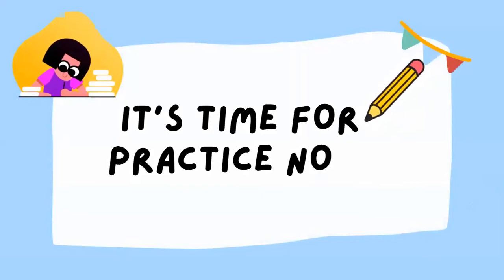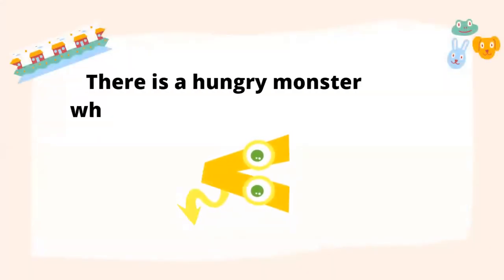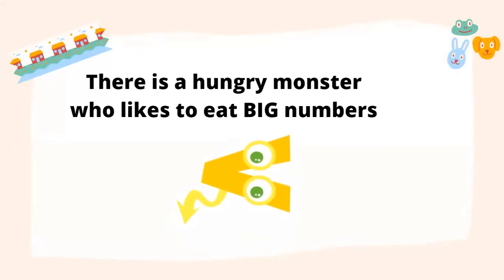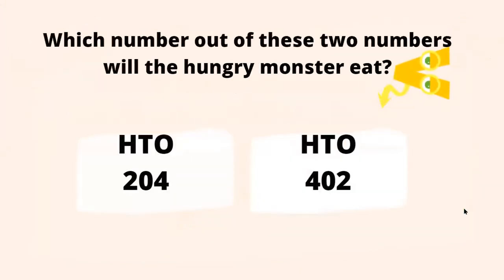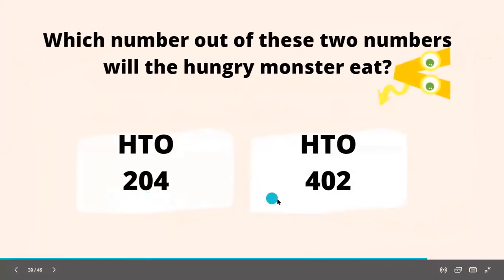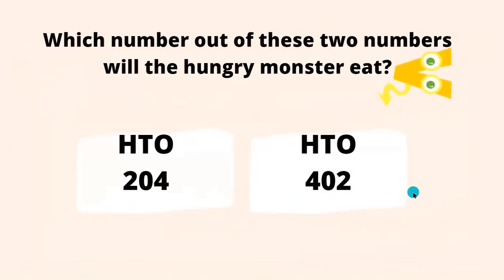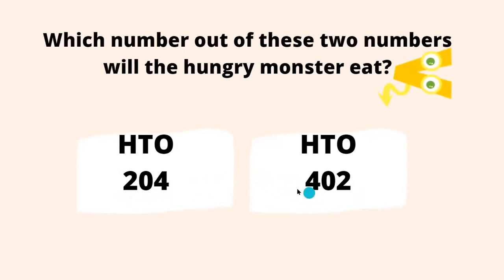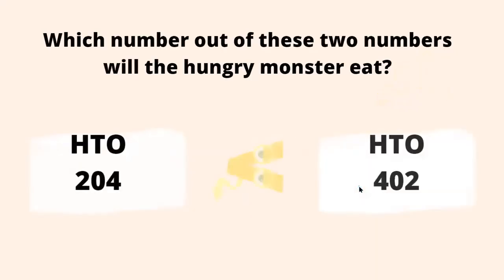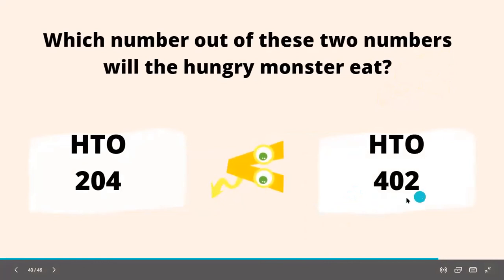It's time for some practice! There is a hungry monster who likes to eat big numbers. Which number will the hungry monster eat — 204 or 402? Let's compare them. We look at the digit at the leftmost place, which is the hundreds place — here it is 2 and here it is 4. Four is greater than 2, so 402 is greater than 204. That means the hungry monster is going to eat the number 402!